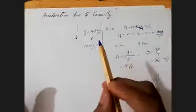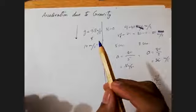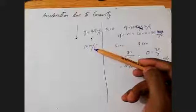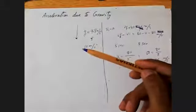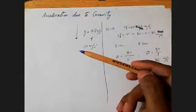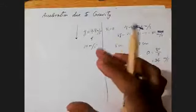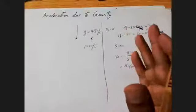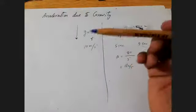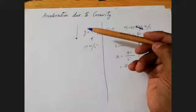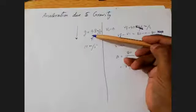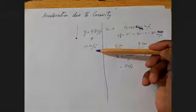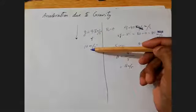This is a constant acceleration, but here we have to neglect air resistance. If we are considering 9.8 or 10 meter per second squared, you will have to ignore air resistance. Whether you are dropping a feather or a stone from a certain height, if there is no air resistance, both bodies will fall on the surface of the Earth with the same acceleration — 9.8 or 10 meter per second squared.